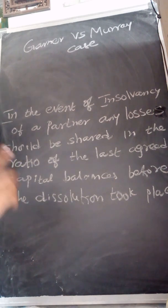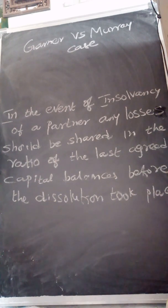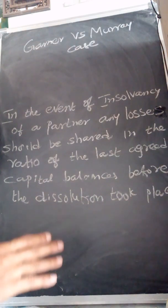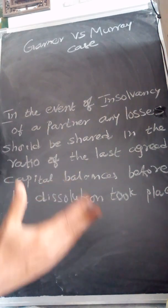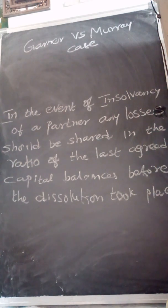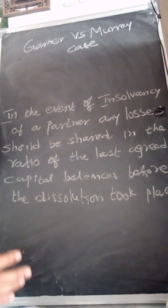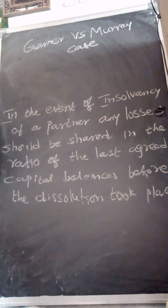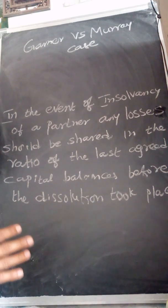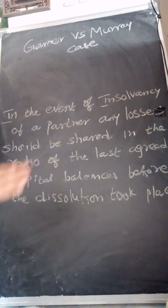In the case of Garner vs. Murray, the judge's verdict clearly showed the difference between a loss arising from dissolution and a loss arising from the insolvency of a partner's debit balance. At the time of dissolution, we prepare a realization account. The realization loss should be distributed among all the partners, but the solvent partners have to introduce an equal amount of cash for their share of the realization loss.